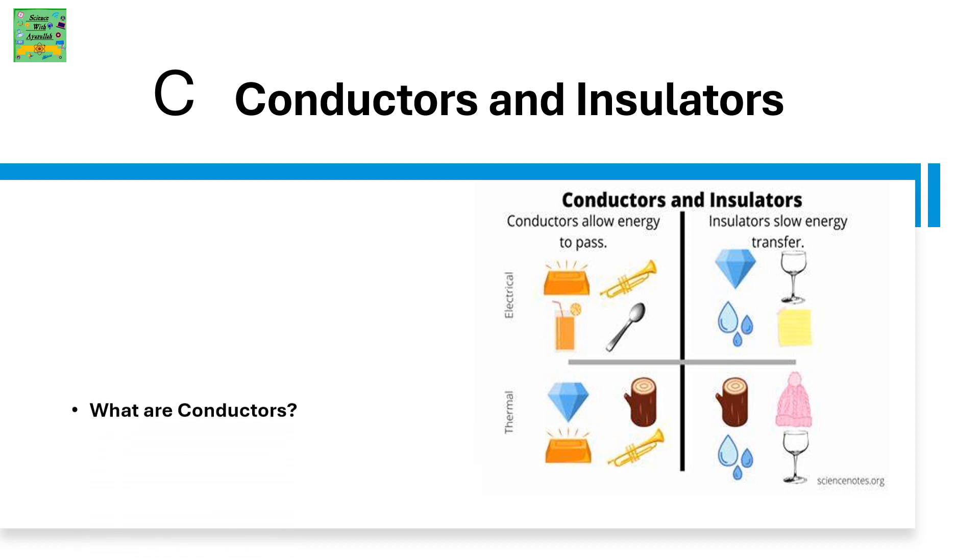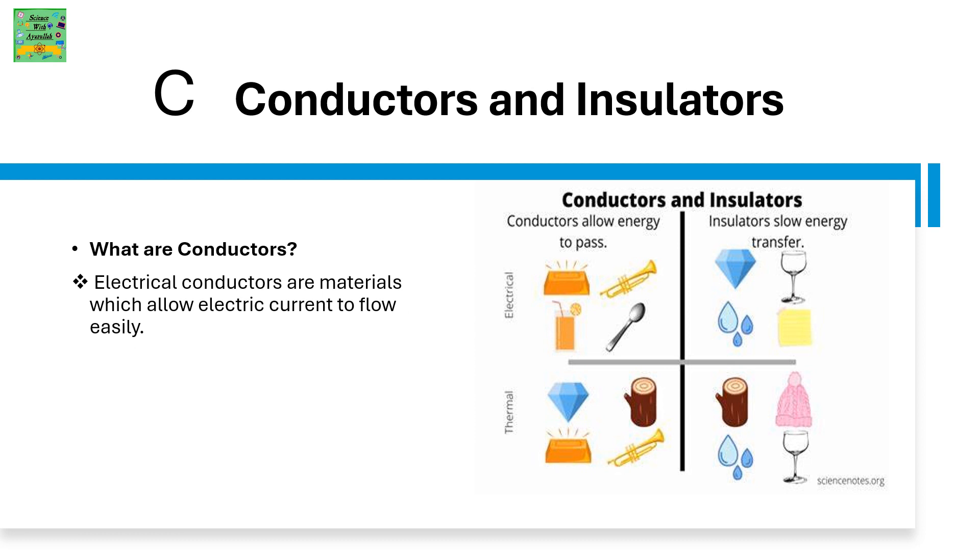Conductors and insulators. What are conductors? Electrical conductors are materials which allow electricity current to pass easily. Metals are a good conductor of electricity. Copper is the most common material used for electrical wires.